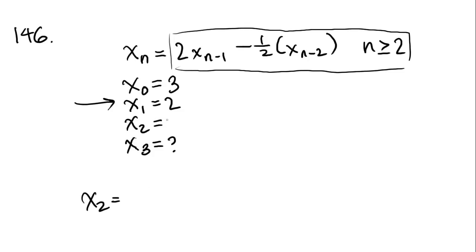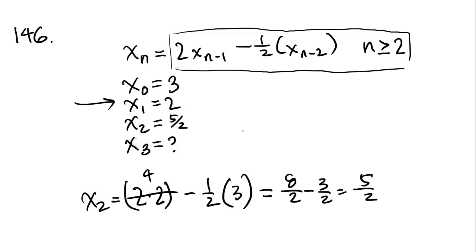So x to the 2, if n were 2, then 2 minus 1 would be 1. So 2 times x to the 1, so 2 times 2, minus half of x to the n minus 2, that's going to be 3, equals, it would be 4, and then 3 over 2, so 8 over 2 minus 3 over 2 equals 5 over 2. So we just found out that x to the 2 is 5 over 2. Now that we have that, we can figure out what x to the 3 is, so we don't need that anymore.